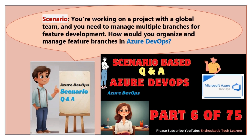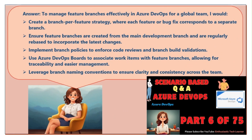Scenario six: you're working on a project with a global team and you need to manage multiple branches for feature development. How would you organize and manage feature branches in Azure DevOps? To manage feature branches effectively for a global team, I would create a branch-per-feature strategy where each feature or bug fix corresponds to a separate branch. Ensure feature branches are created from the main development branch and are regularly rebased to incorporate the latest changes.